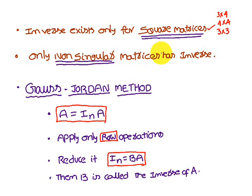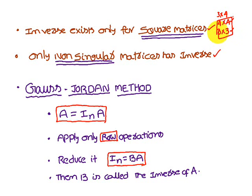Next, only non-singular matrices have an inverse. So if you consider a 4x4 or 3x3 matrix, if the determinant is not equal to 0, then only it has an inverse. So first it should be a square matrix — 3x3 or 4x4 and so on — and its determinant must be not equal to 0. Then it possesses an inverse.